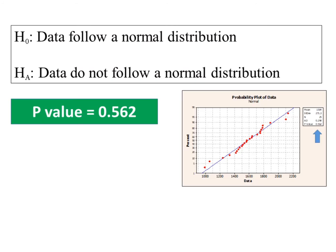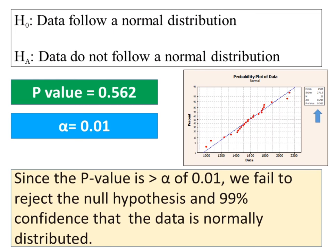The p-value is 0.562. Assume the level of significance alpha is 0.01. Since the p-value is greater than alpha of 0.01, we fail to reject the null hypothesis and have 99% confidence that the data is normally distributed.